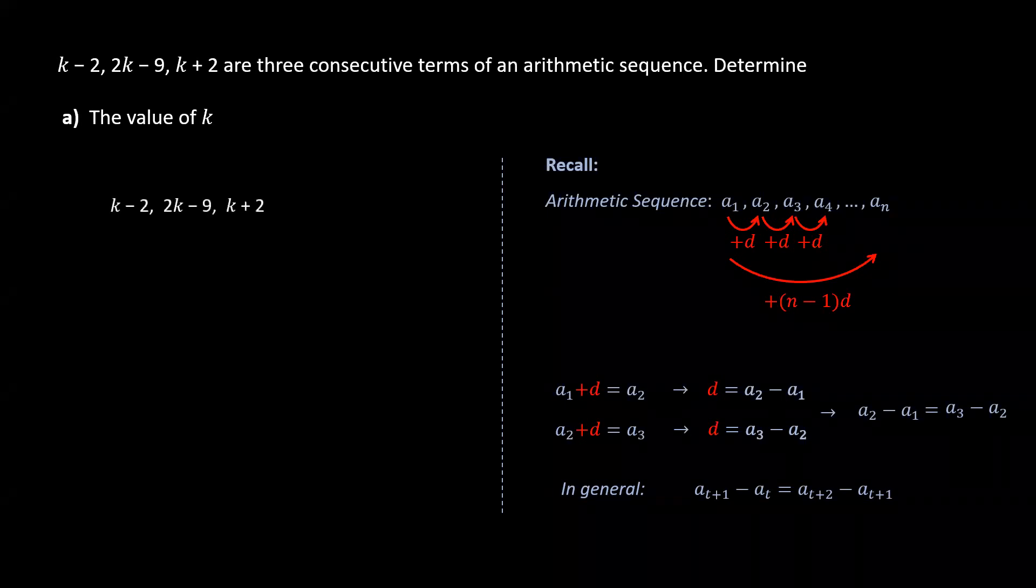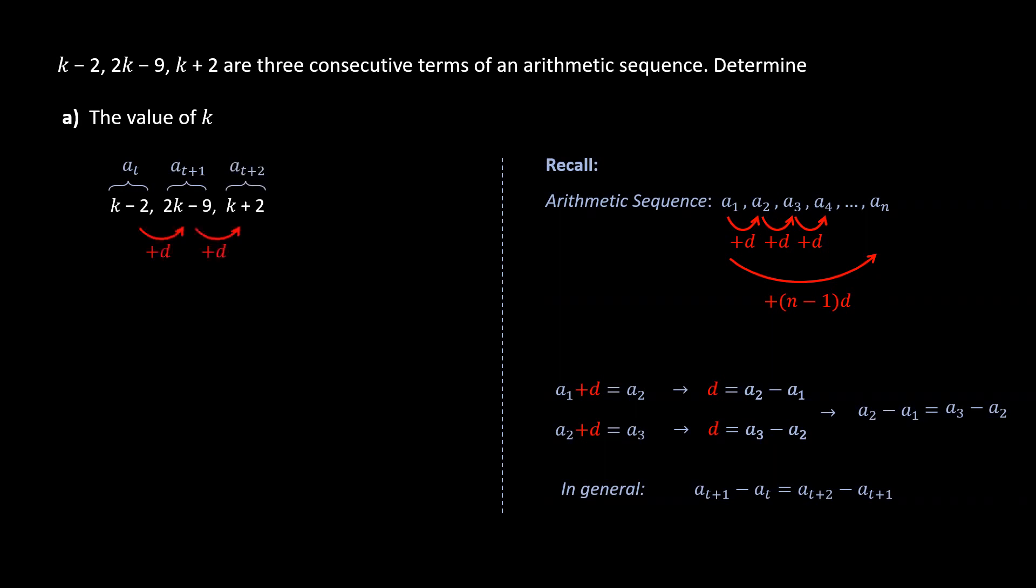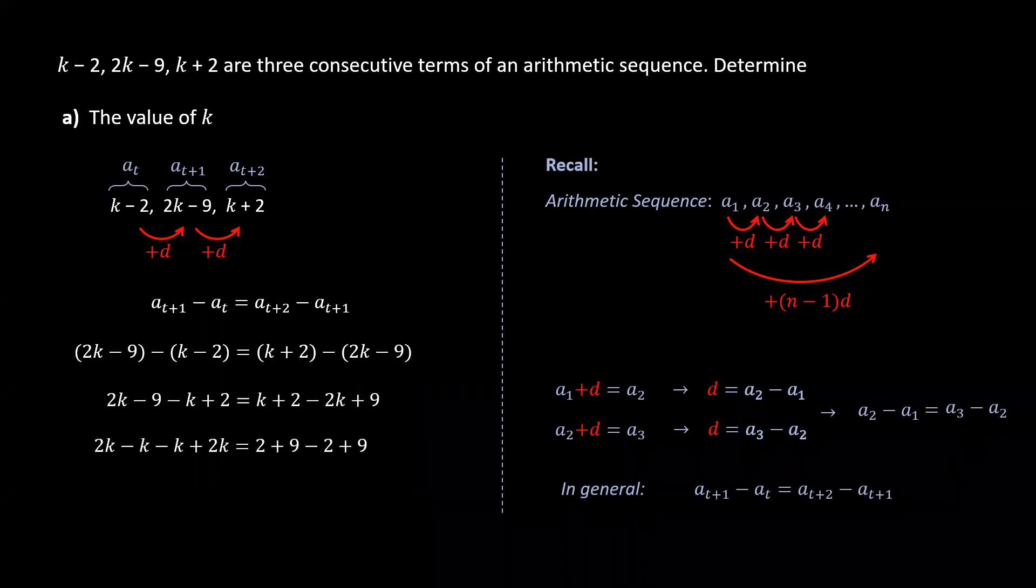Going back to our terms, letting the first term be the t term and the second t+1 and the third t+2, we can conclude that the difference between the first two terms equals the difference between the last two terms. Then we substitute the given terms, distribute the negative in the second brackets on both sides, then collect the k terms on the left-hand side and the numbers on the right-hand side.